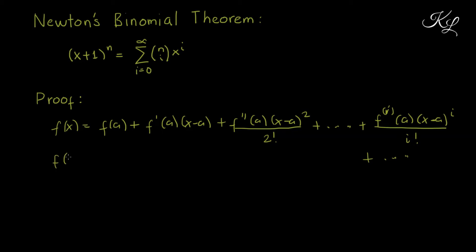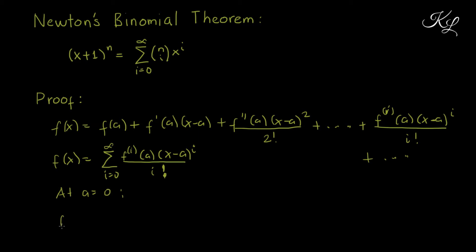We can rewrite this into summation notation, which is more helpful for our proof. So we write f(x) equals the summation of the i-th derivative of f at a, times (x minus a)^i over i factorial, from i equals 0 to infinity. If we take a equal to 0, we get f(x) equals summation of the i-th derivative of f at 0, times x^i over i factorial, from i equals 0 to infinity. Let us label this as equation 1.